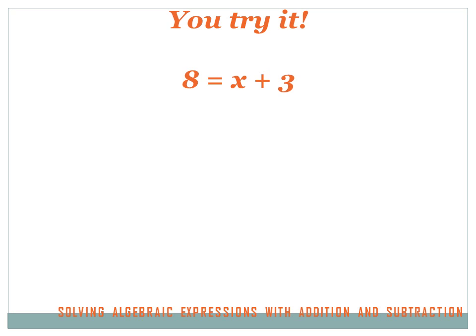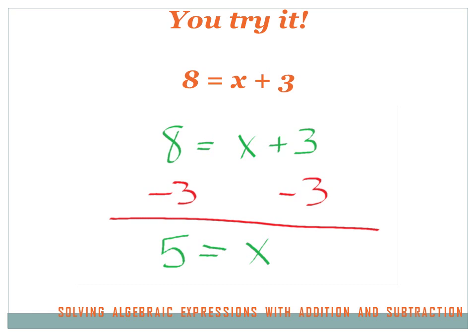Now you try one on your own: 8 equals x plus 3. Don't get confused because x is on the right side instead of the left — it's the same process. Hit the pause button, try the problem, then hit the forward key. I need to get rid of that plus 3 to isolate x. The opposite of adding 3 is subtracting 3, so I subtract 3 from both sides. x plus 3 minus 3 leaves just x, and 8 minus 3 equals 5. So x equals 5.